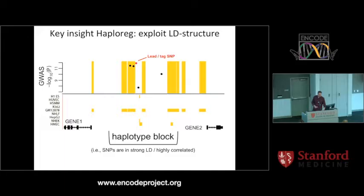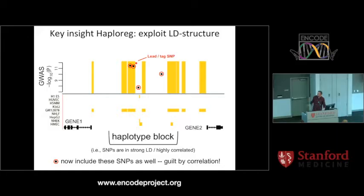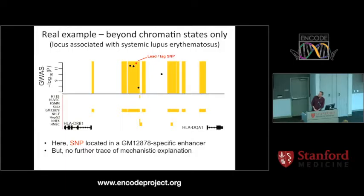What HaploReg does — and I'm just showing you the chromatin states for GM12878 here — is it looks at the LD structure: which nearby SNPs around the lead or tag SNP are in very strong LD with it. The idea is that if that correlation is strong enough, you can also look at the other SNPs that you can impute or derive in other ways. So even though our lead SNP is not inside an enhancer region, we now have a bunch of candidates in the haplotype block we can also look at. As you can see, at least two of them are in enhancer regions specific for GM12878.